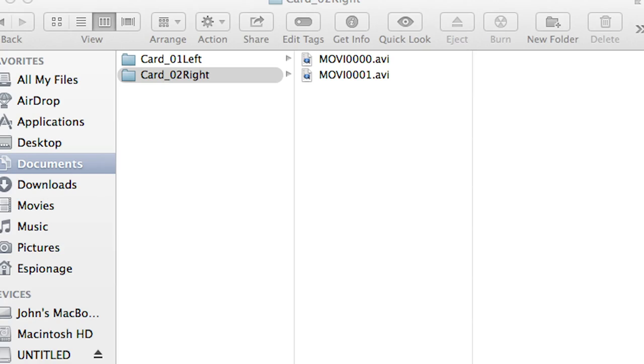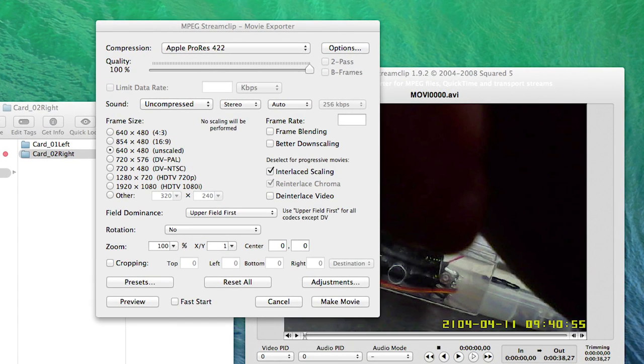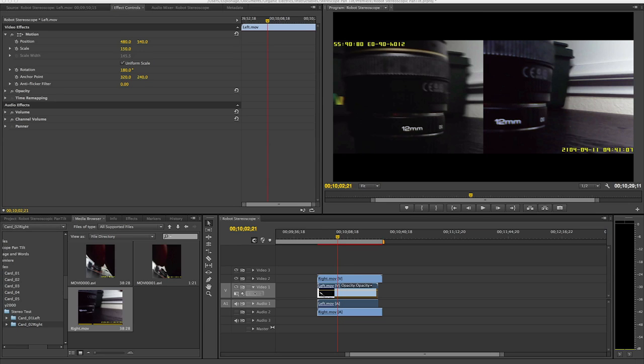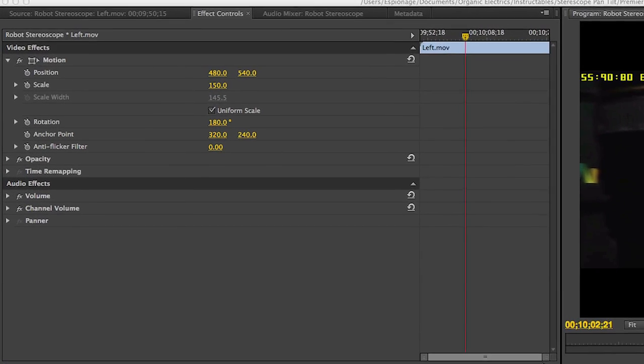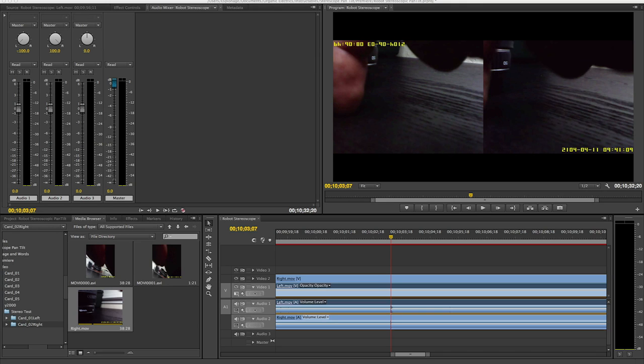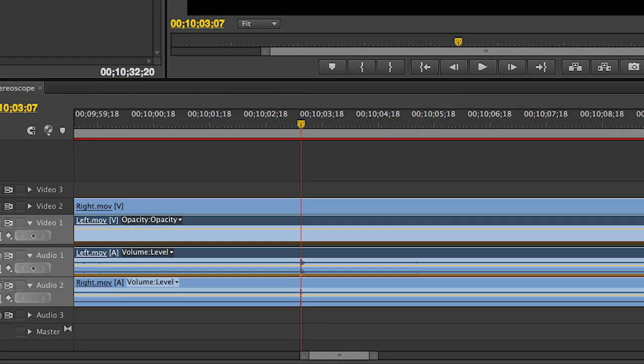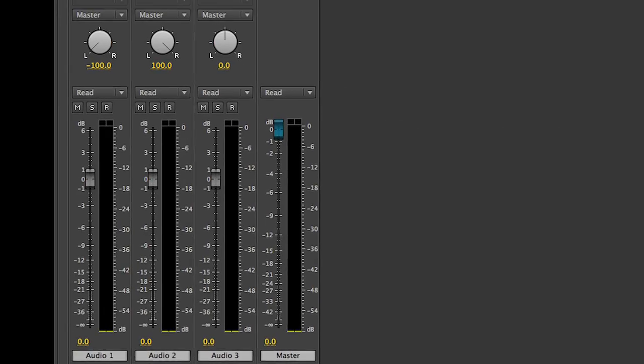When you're ingesting your files keep them organized between left and right cameras and you may need to convert them into a file format your editing software understands. Rotate the left camera 180 degrees and pan the audio of each camera to the left and right to get full stereo.